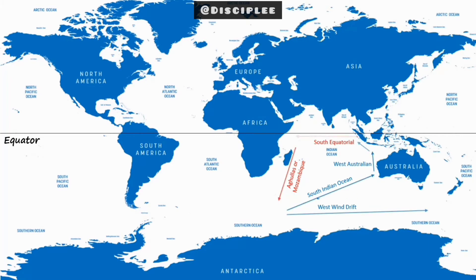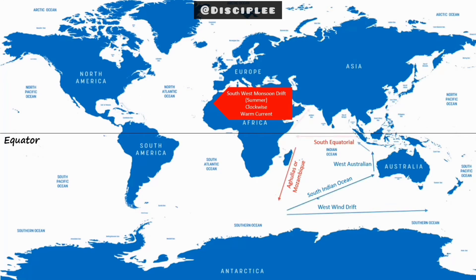In the North Indian Ocean, there is complete reversal of the direction of currents between summer and winter due to changes of monsoon winds. In summer, from June to October, when the dominant wind is the southwest monsoon, the currents are blown from a southwesterly direction as the Southwest Monsoon Drift.